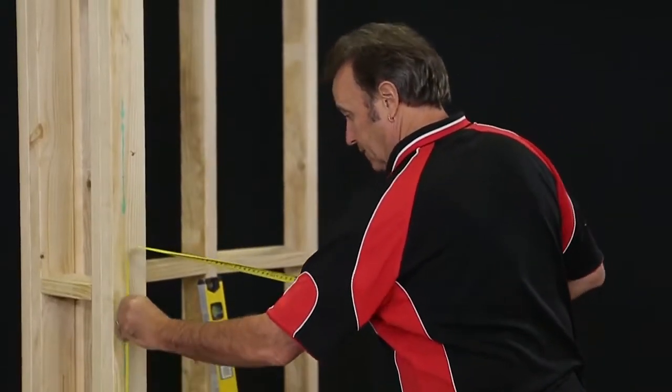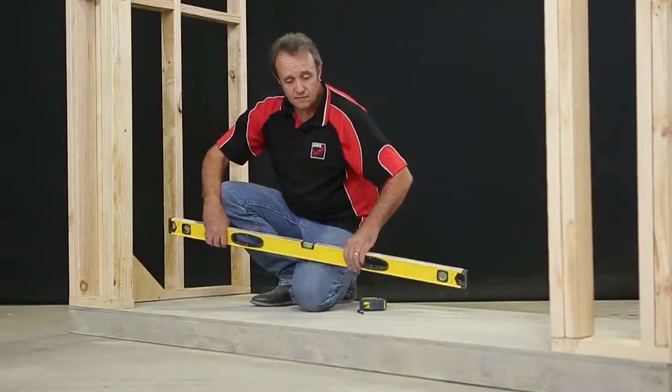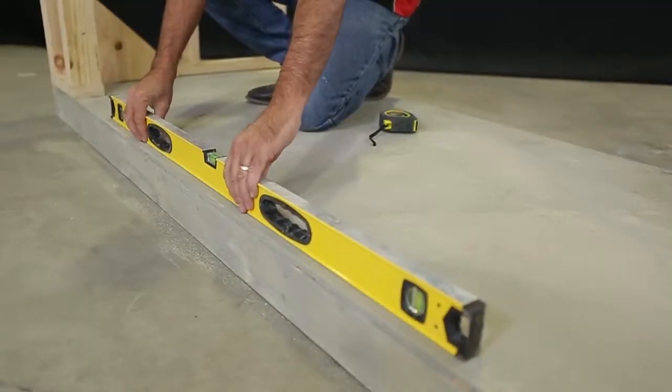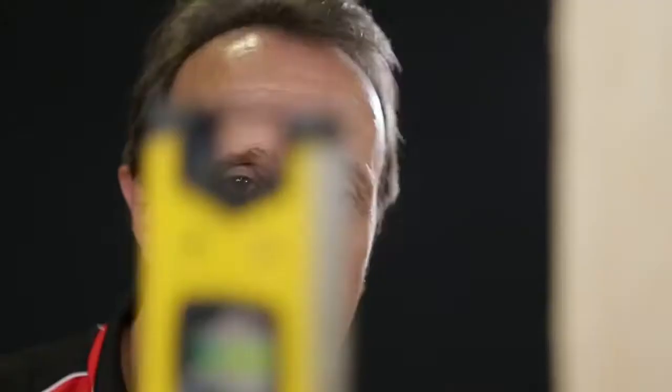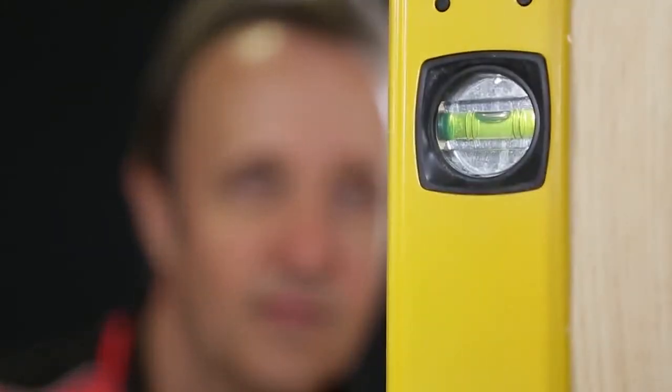You should also use the level to be sure the opening is reasonably plumb, level, and square. The door seal needs to be fully supported and straight for the door to operate properly, so make sure the seal has no twist, bow, or roll.